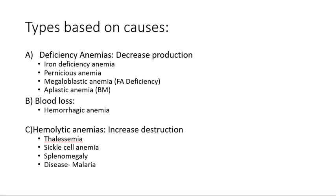Depending on causes, anemias can be classified under three headings. First is deficiency anemia, where some nutritional deficiency is the basic cause. Types under this heading include iron deficiency anemia, pernicious anemia due to B12, megaloblastic anemia which can be due to folic acid deficiency or B12, and aplastic anemia which can be due to deficiencies or bone marrow abnormalities.